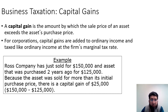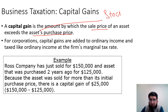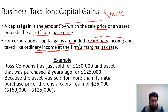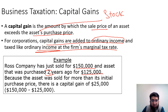A capital gain is the amount by which the sale price of an asset exceeds its purchase price. The asset could be a stock — you buy at a certain price, sell at a higher price, and the difference is a capital gain; a negative difference is a capital loss. For corporations, capital gains are added to ordinary income and taxed at the firm's marginal tax rate. For example, Ross Company sold an asset for $150,000 that was purchased two years ago for $125,000, resulting in a capital gain of $25,000.